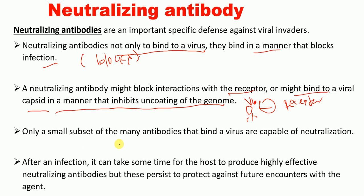Only a small subset of the many antibodies that bind the virus are capable of neutralization, and those are called neutralizing antibodies. After infection it can take some time for the host to produce highly effective neutralizing antibodies, but once produced, these persist to protect against future encounters with the virus or causative agent.